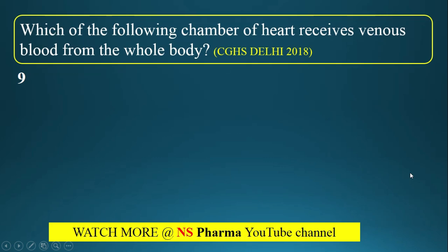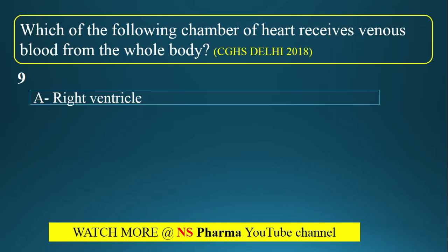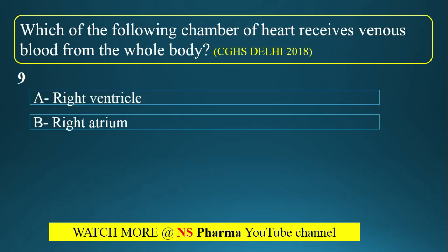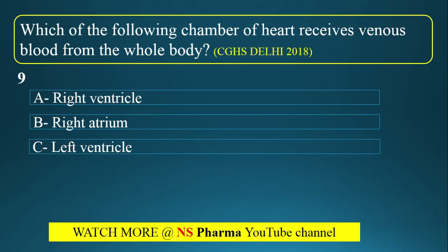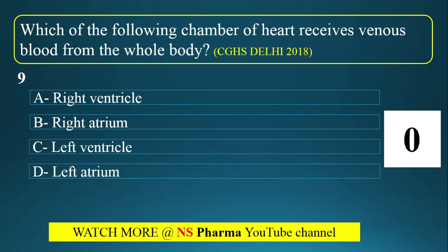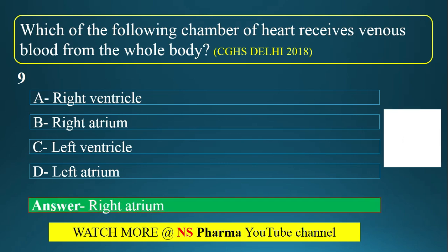Question number 9: Which chamber of the heart receives venous blood from the whole body? We know there are 4 chambers of the heart. Options are right ventricle, right atrium, left ventricle, left atrium. The correct answer is Option B — right atrium receives venous blood.